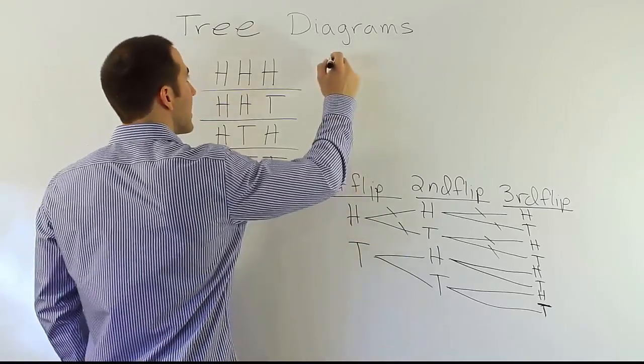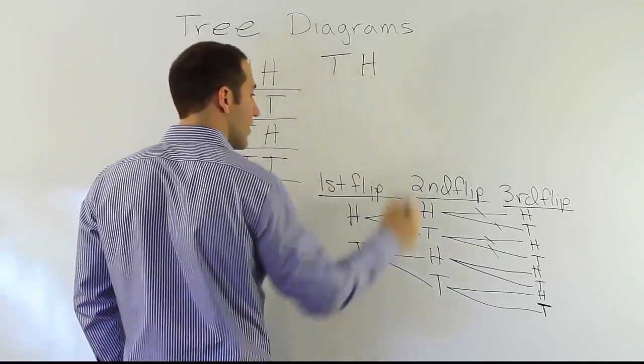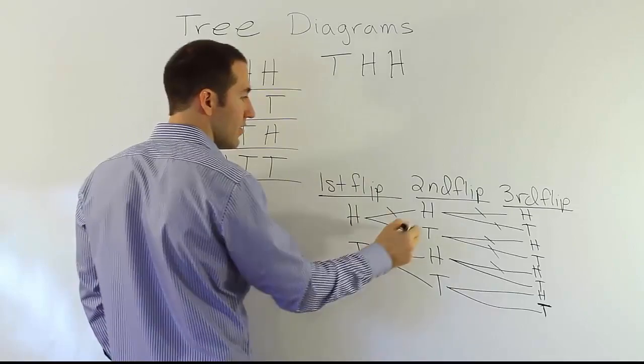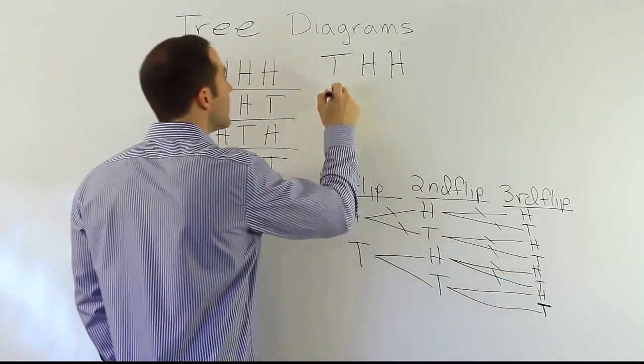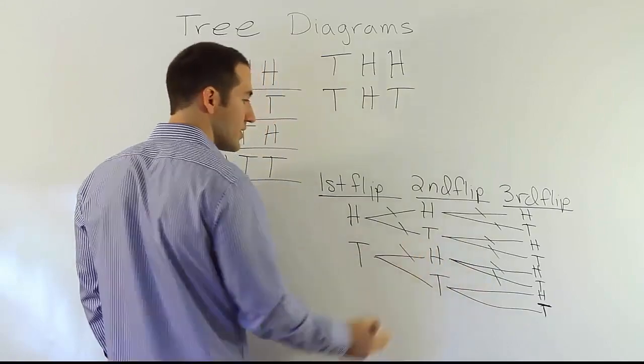Now if we start out with tails, we could have tails, heads, heads. Then we could have tails, heads, tails. Tails, heads, tails. We've used up all those branches, so that one's done.